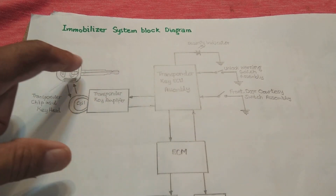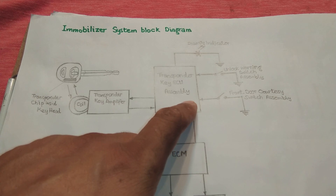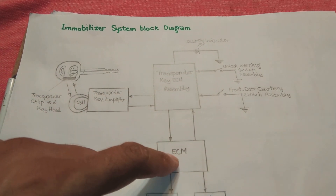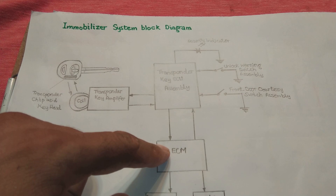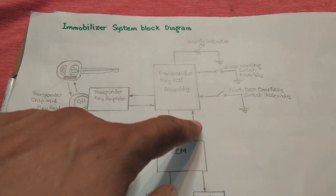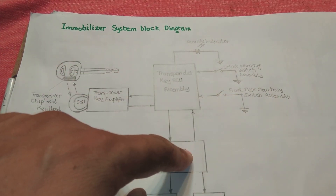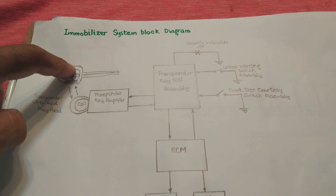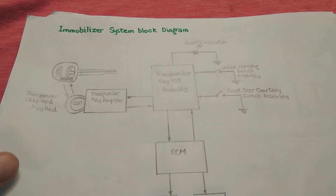The chip inside the transponder key ECU contains stored data. That stored data is compared to the incoming data from the key transponder. When the codes match, it sends a signal to the ECM that the key is original and correct, and that the immobilizer should be cancelled. The ECM cancels the immobilizer, provides injector pulses and ignition pulses, and sends a return signal to the transponder key ECU telling it to stop blinking the security indicator. The security indicator stops while the original key is in the cylinder.